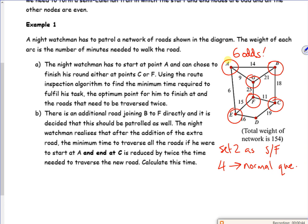So we've got a night watchman on patrol who's got to wander around all the different corridors and rooms. The night watchman starts at point A and can choose to finish at either point C or point F. So A, C, and F are all odds, and the rest are evens.